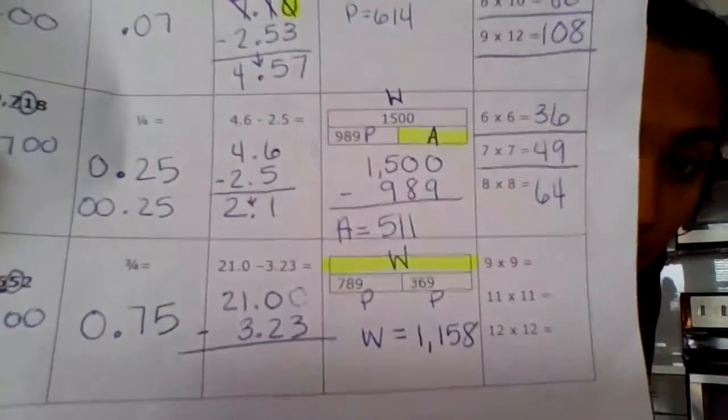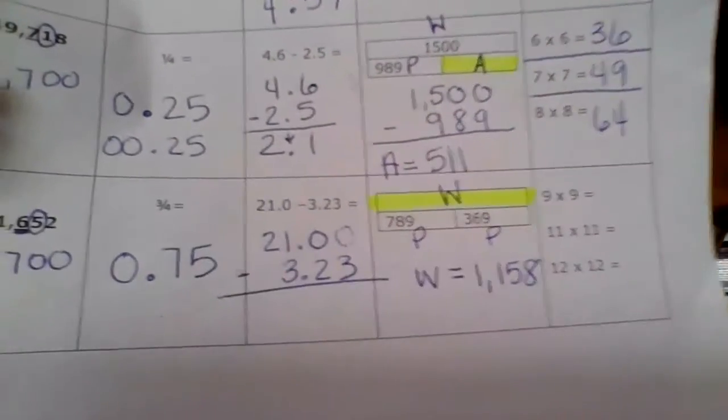On your 'Give Me Five' paper, the missing variable representing the unknown was w, so write w equals one thousand one hundred fifty-eight on your paper.